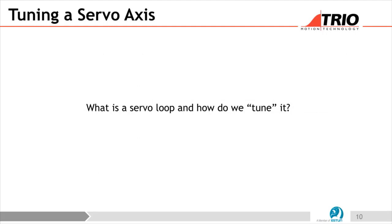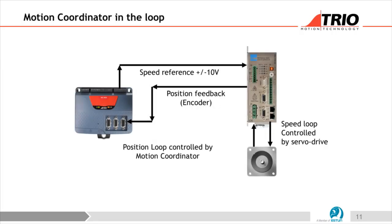We're going to look at setting up a servo loop. In our controllers, we do the intelligent positioning and motion profiling, and leave it to the servo drive to control the motor. We're not directly controlling a stepper or servo motor — we leave that to the drive. For hydraulic systems, there's a hydraulic controller somewhere controlling the current into the hydraulic valve.